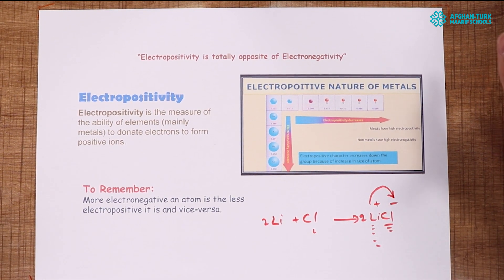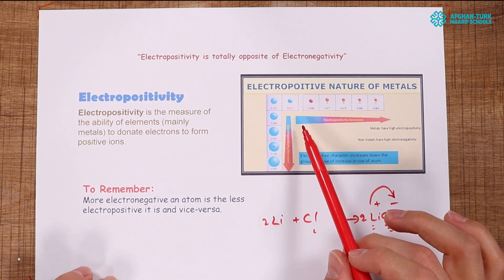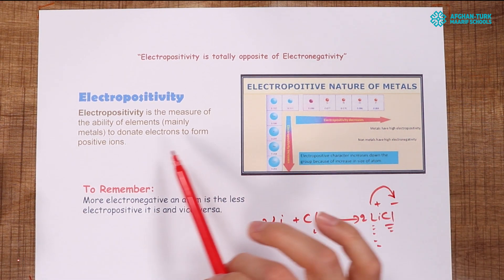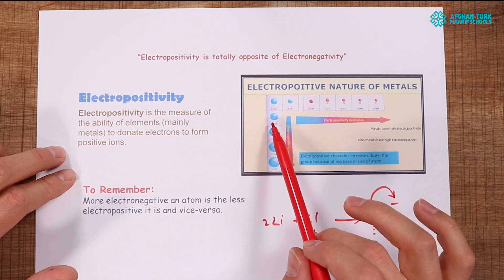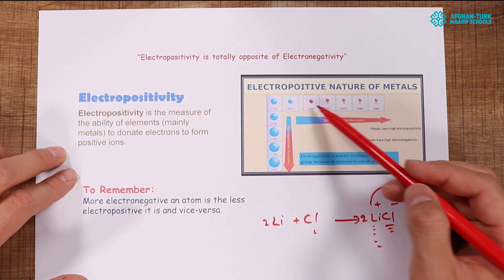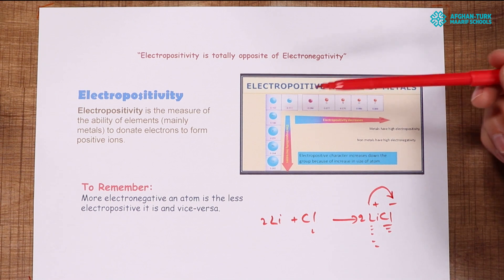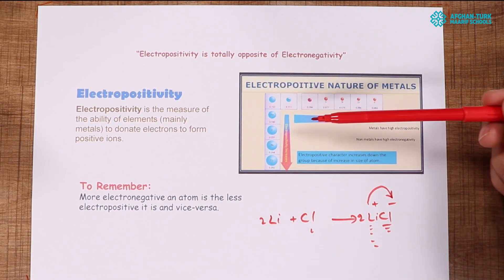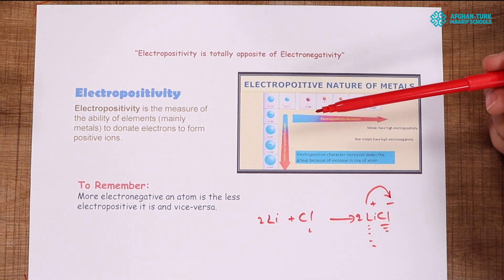Electropositivity is totally opposite to electronegativity. While electronegativity increases from left to right, electropositivity decreases from left to right, or increases from right to left. In electronegativity, it decreases from top to bottom, but electropositivity increases from top to bottom.